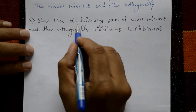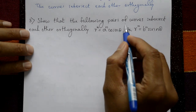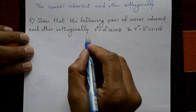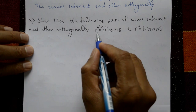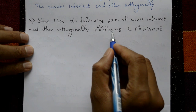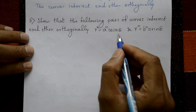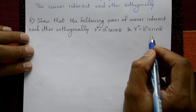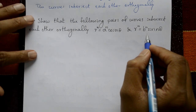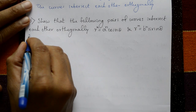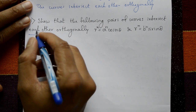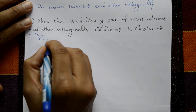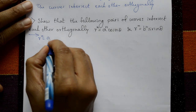Show that the following pairs of curves intersect each other orthogonally: first, r^n = a^n·cos(nθ); second, r^n = b^n·sin(nθ). Now for the solution, the first curve r^n is equal to a^n·cos(nθ).